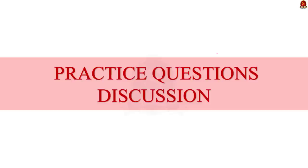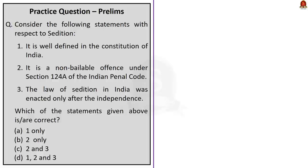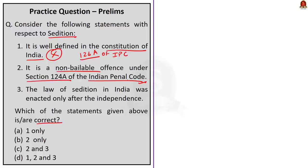Now let us take up the practice prelims questions. The first question is about sedition law in India with three statements. Statement 1: 'It is well defined in the Constitution of India' — this is wrong. Sedition is not defined anywhere in the constitution; it is defined under Section 124A of the IPC. Statement 2: 'It is a non-bailable offense under Section 124A of the IPC' — this is correct. Statement 3: 'The law of sedition in India was enacted only after independence' — this is wrong; the sedition law was enacted by the British in 1870. So statement 2 is the only correct one. The correct answer is option D, 2 only.